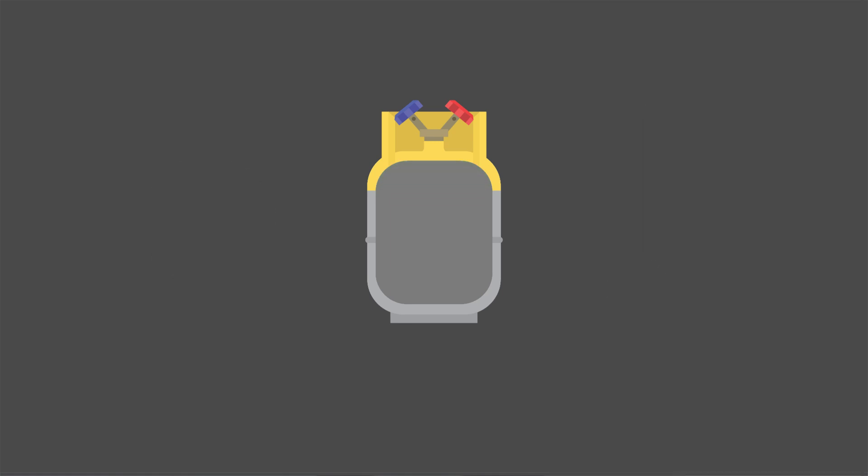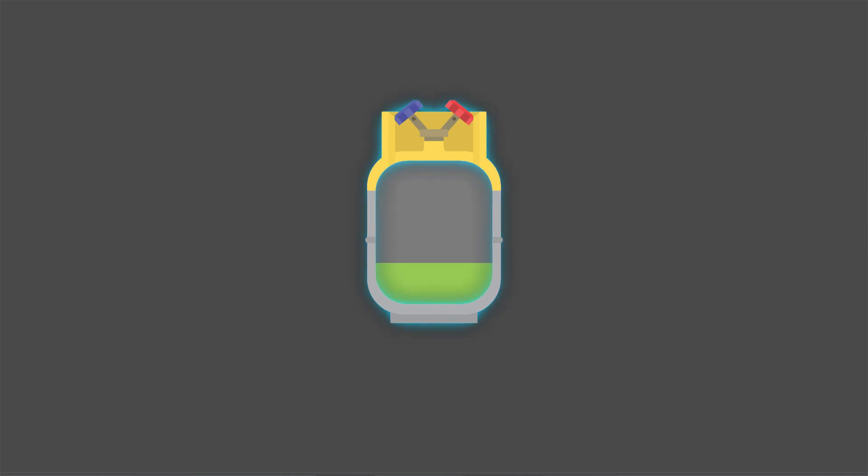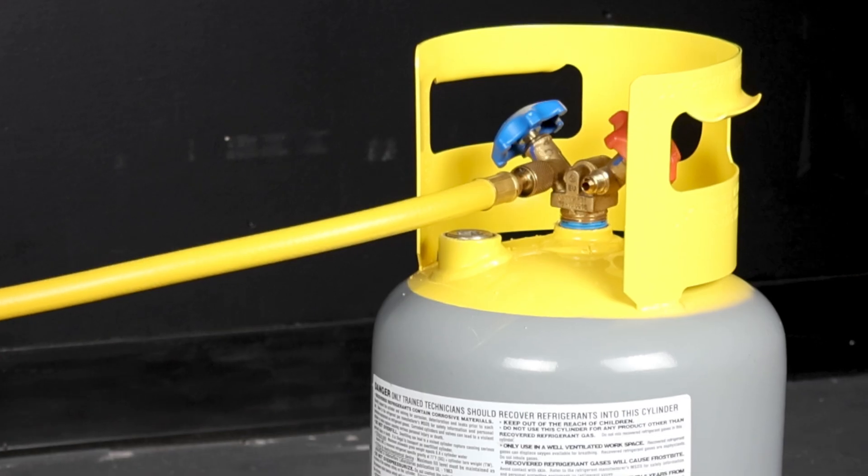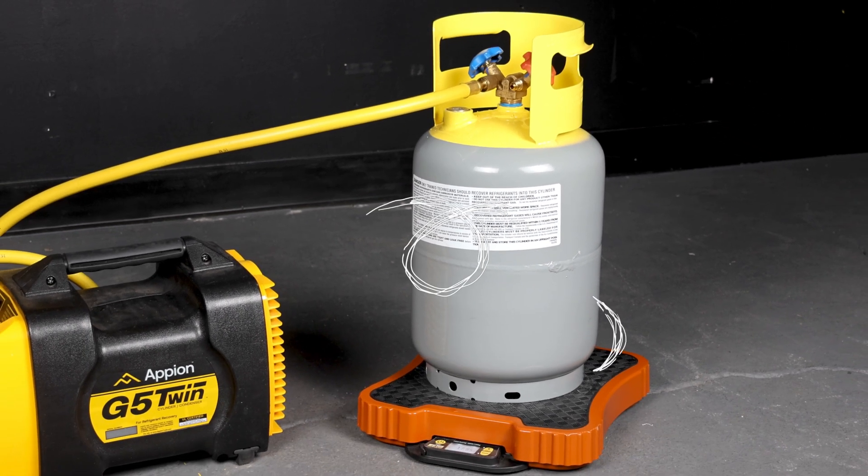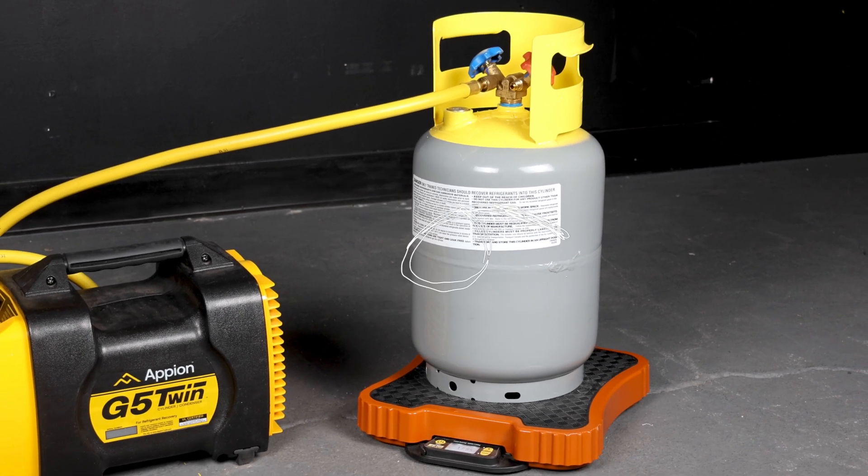The best way to keep the cylinder temperatures low during recovery is to maintain liquid refrigerant flow from the system to the recovery cylinder. In instances where this is not attainable, using the fan from the recovery machine to draw air over the recovery cylinder can help dissipate heat.